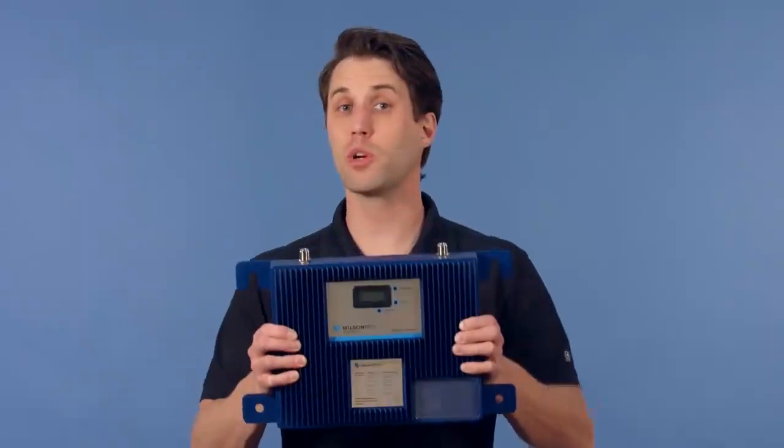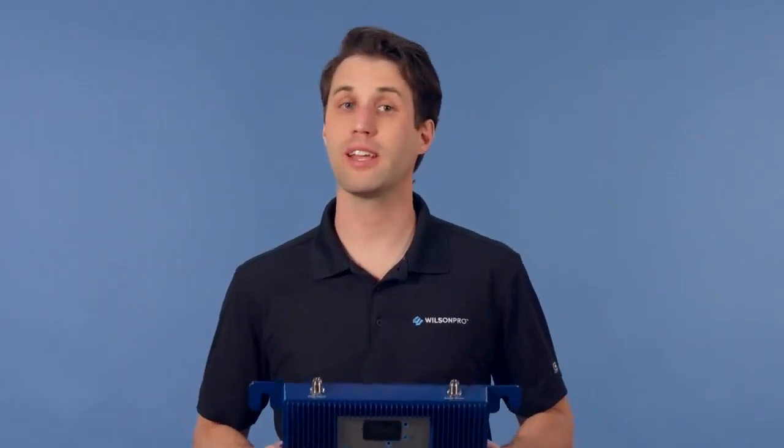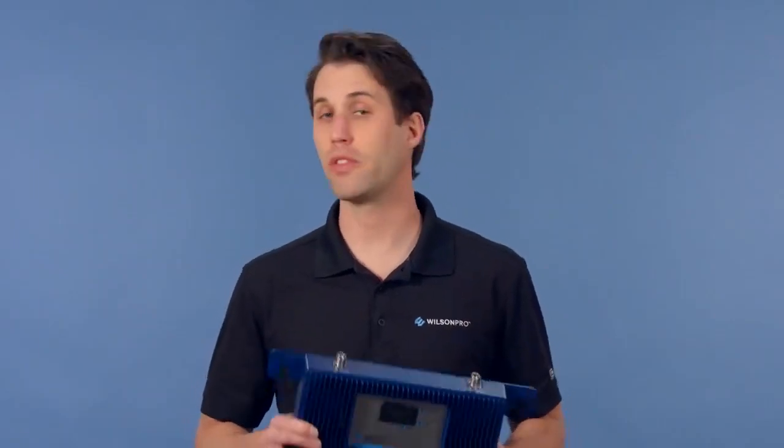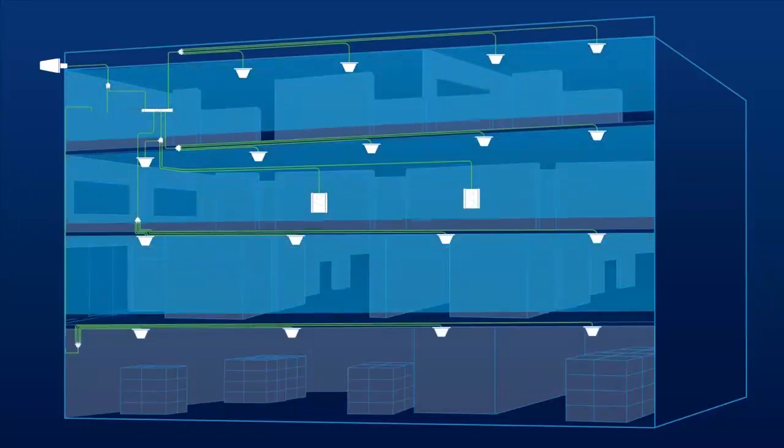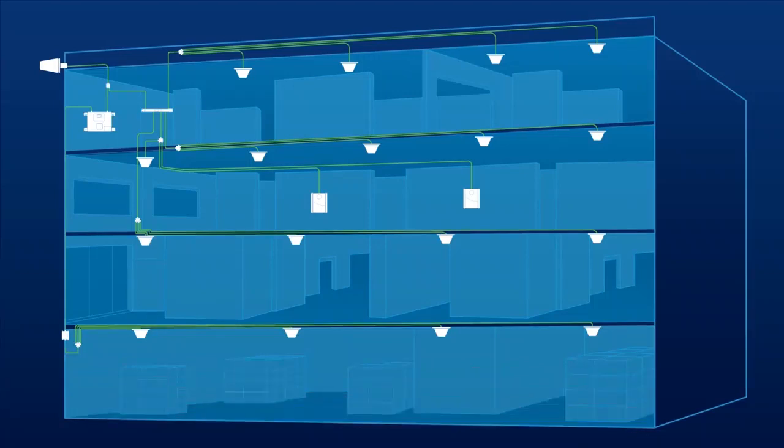The Pro 1050 works well on its own, but in most cases will be utilized as a companion amplifier to the Pro 4000 or the Pro 1000. One of these boosters would be used to provide coverage for most of the building, while the Pro 1050 would be used to cover those hard to reach areas like basements.